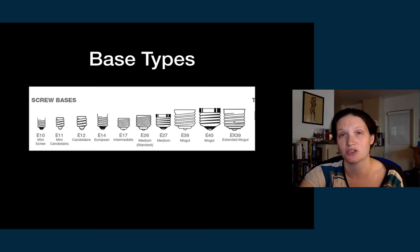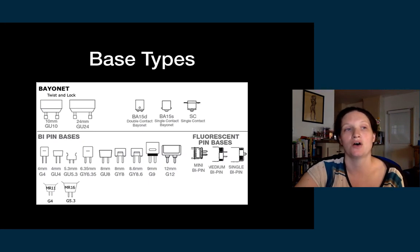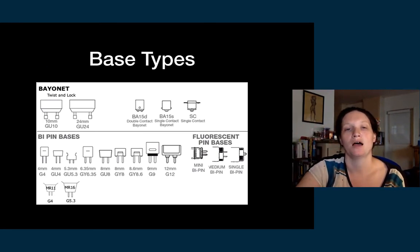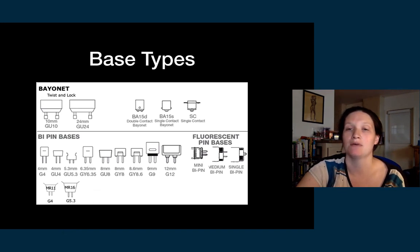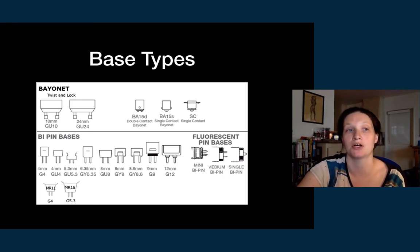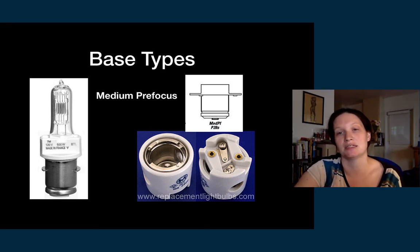Candelabra bases are found on some house fixtures — a lamp from IKEA might have a candelabra base, and they'll also be in chandeliers. Those small candelabra bases can also be found on some theatrical lighting fixture lamps. Bayonet bases have little knobby nubbin things on the bottom. Bi-pin bases are like the lamps the Source 4 Minis had — fluorescent tubes also have bi-pin bases. Any lamp base with two pins sticking out is bi-pin. Our HPL — the standard Source 4 lamp — also has a bi-pin base, where you just pull them in and push them out.